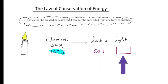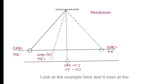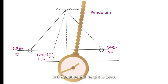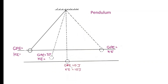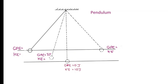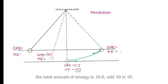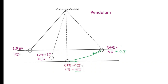Here is an example to apply the law of conservation of energy — think about a pendulum. At the lowest position, the gravitational potential energy is zero because the height is zero, and the kinetic energy is 10 joules as it is moving fastest there. At the very top, the pendulum stops before turning back, so kinetic energy is zero joules.